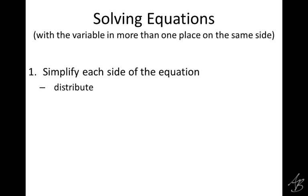We don't want parentheses because when we have parentheses, it's hard to combine like terms. In fact, it's impossible to combine like terms when you have something in parentheses being multiplied by something outside the parentheses. Once we get rid of parentheses, we want to combine like terms. To simplify each side of the equation, we distribute wherever necessary, and we combine like terms. Once we do that, all of the variables are going to be in one place — they might have started out in different places, but combining like terms puts them all in one place.